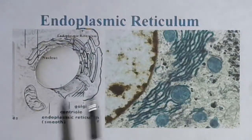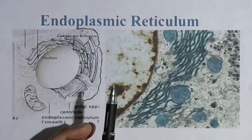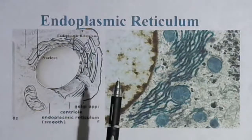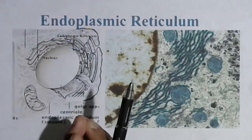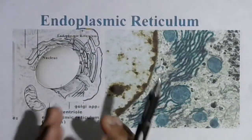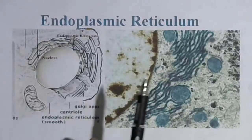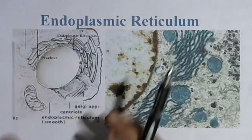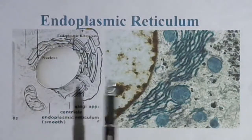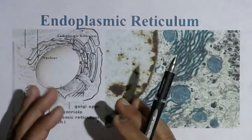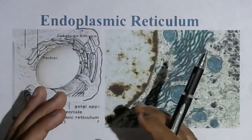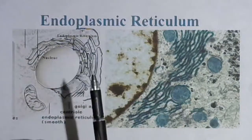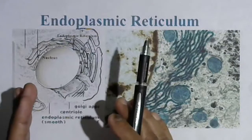My friends, in prokaryotic cells like bacteria, endoplasmic reticulums are absent. These structures are present in eukaryotic cells. But keep in mind, among eukaryotic cells, some cells are without endoplasmic reticulum — those are exceptional cells. Actually, the germinal cells and the mature mammalian RBCs, that means erythrocytes or red blood cells, are lacking endoplasmic reticulum.